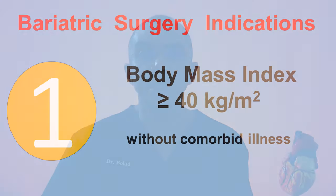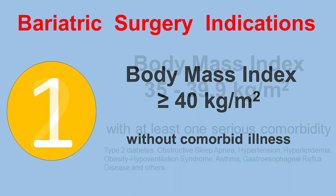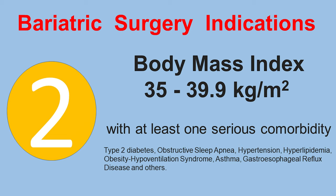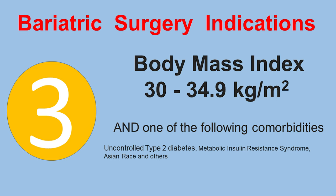Bariatric surgery is indicated for adults with a BMI of more than 40 without comorbid illness; adults with a BMI of 35 to 39.9 with at least one serious comorbidity such as type 2 diabetes, obstructive sleep apnea, hypertension, hyperlipidemia, obesity hypoventilation syndrome, asthma, or gastroesophageal reflux disease; and adults with a BMI between 30 to 34.9 with uncontrollable type 2 diabetes or metabolic insulin resistance syndrome. Consideration should be given for race — for example, in Asian patients the BMI criteria can be lowered by 2.5 per class, related to a higher prevalence of truncal obesity, which is felt to be more hazardous than peripherally located fat.